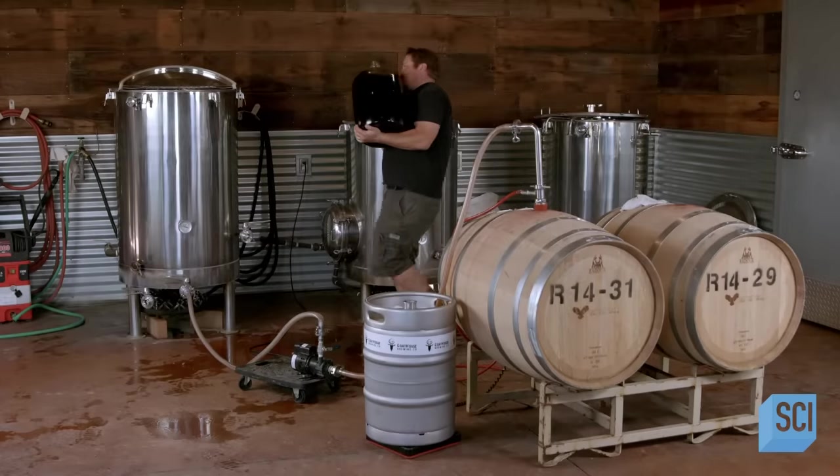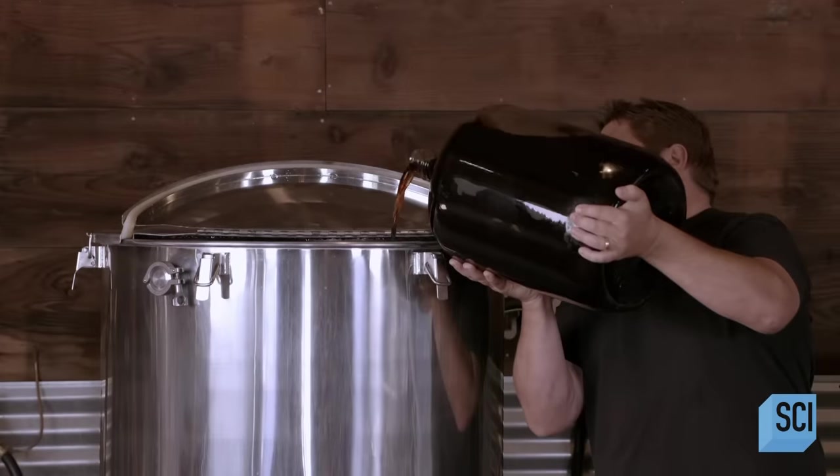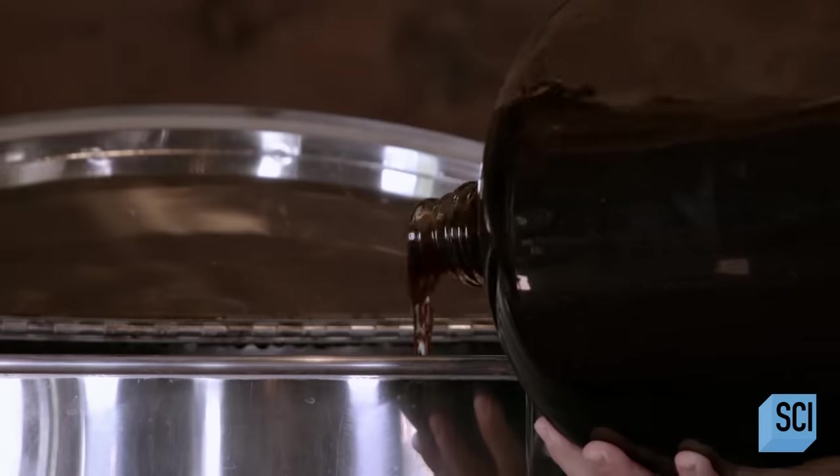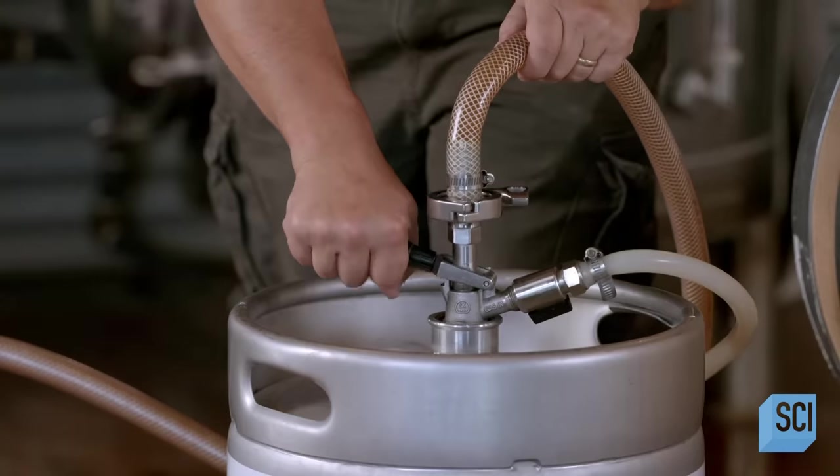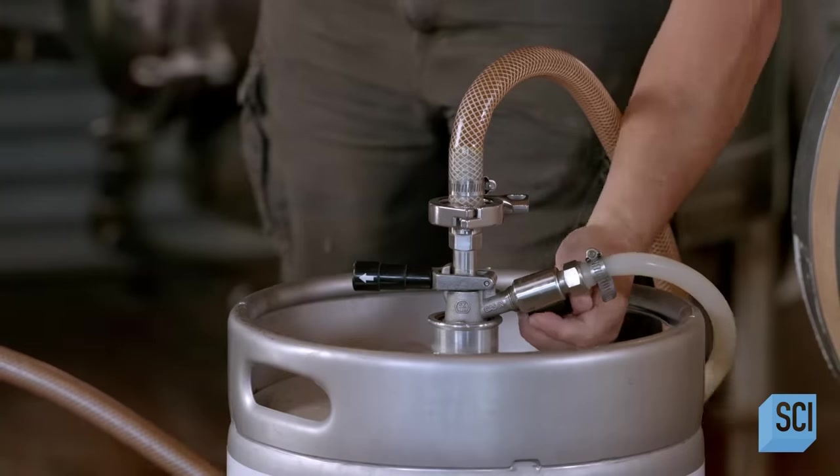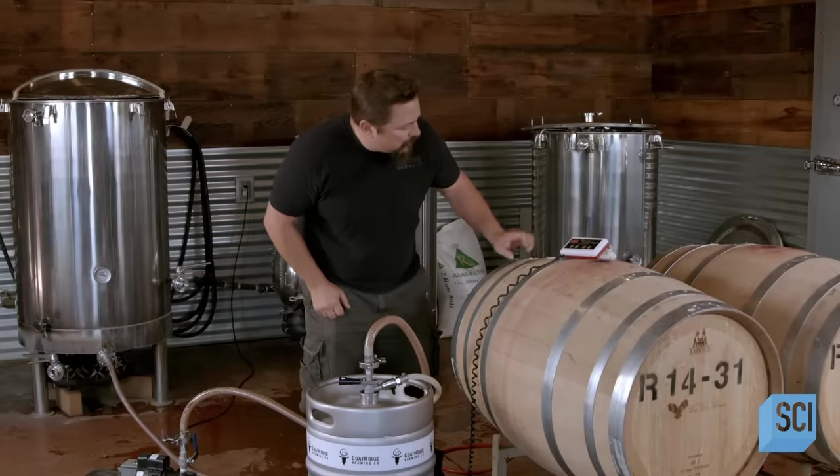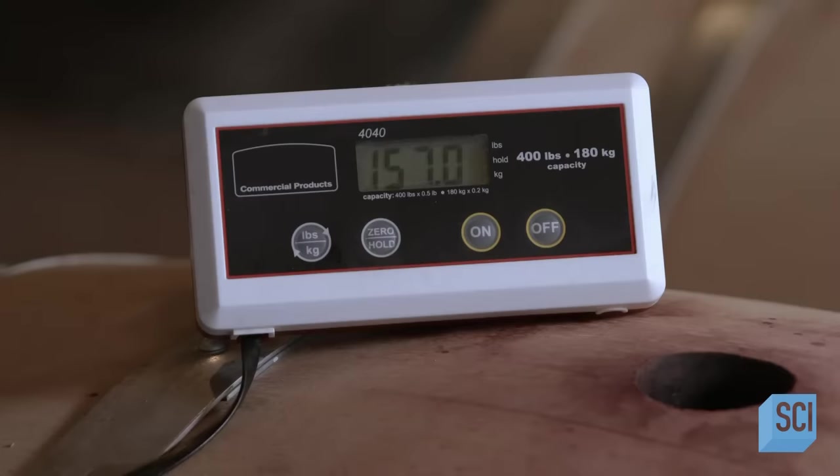He pours the required amount of cold brewed coffee into the blending tank. Then he pumps the required volume of beer into the tank. Beer makes up the largest proportion of the recipe, followed by wine, then coffee.